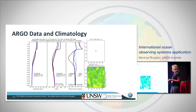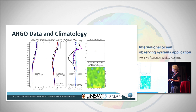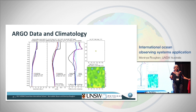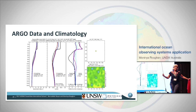Argo is one of the main things that contributes to our understanding of upper ocean heat content — a very significant observation to be getting in real time. Without it you'd be stuck with just satellites. And bear in mind it's only the top 2,000 metres, while the ocean is on average 4 kilometres deep and the deepest part is 11 kilometres. There's a lot of ocean we're not observing.